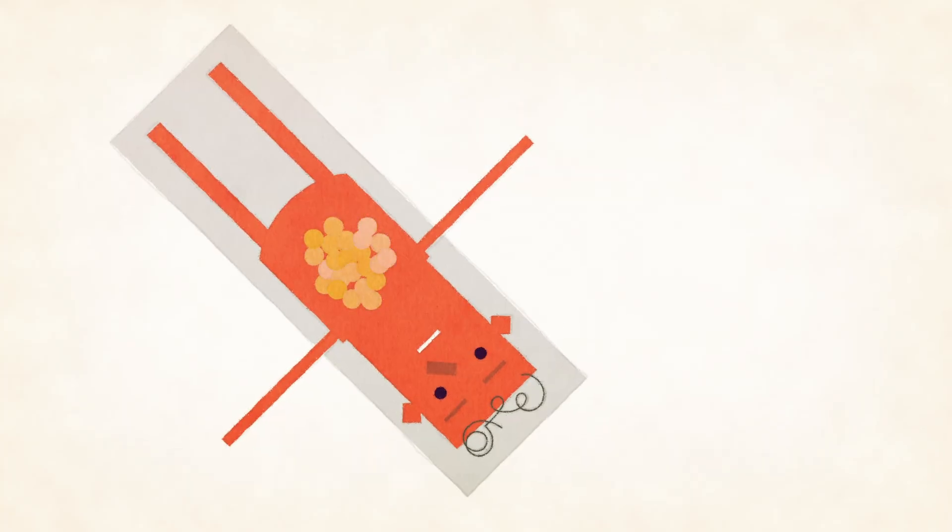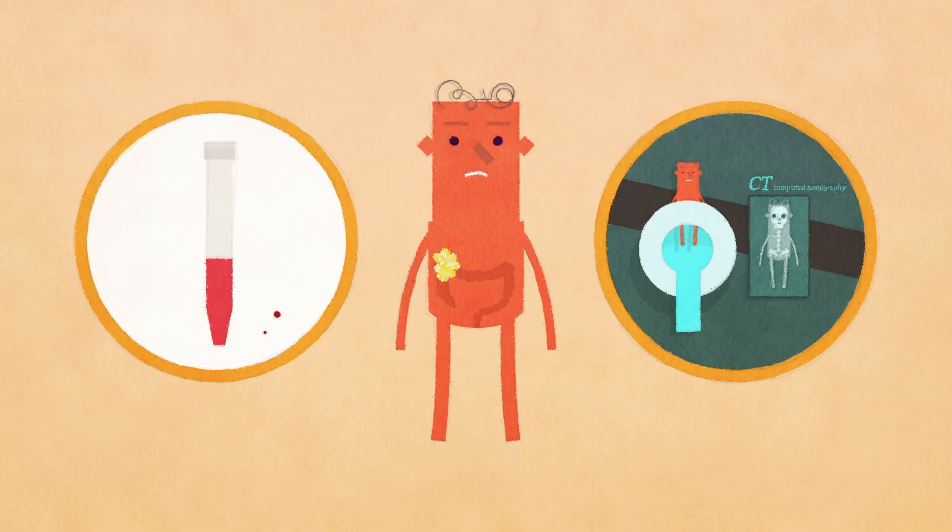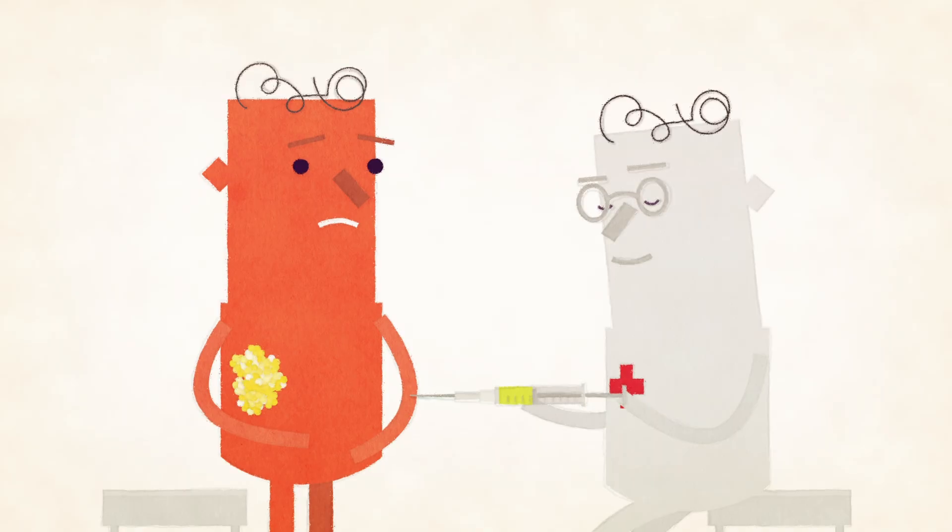Occasionally, polyps are too large to be removed during a colonoscopy, in which case the next step is surgery. If blood and imaging tests then reveal that cancerous cells have spread outside the colon, then a special treatment, like chemotherapy, may also be required to stop the cancer from escalating.